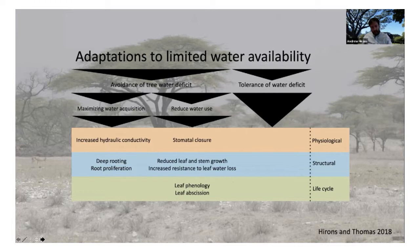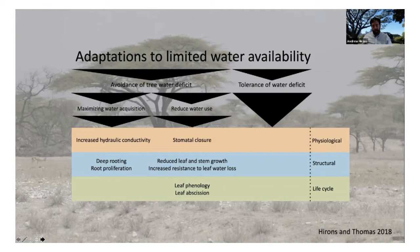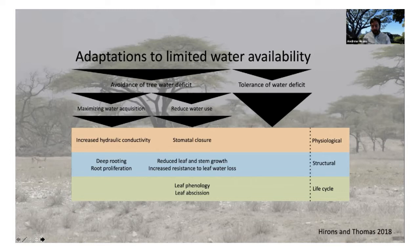A tree can also reduce water use through stomatal closure, reduced leaf and stem growth — producing smaller leaves, for example — and structural features like hairs and waxes that increase resistance to leaf water loss. Phenology can also play a part: some trees are deciduous in the driest period, as seen regularly in Mediterranean species. Premature leaf abscission during drought reduces crown water demand. Finally, and probably most importantly from a tree selection perspective, trees can actually tolerate water deficits by coping with low water potentials.